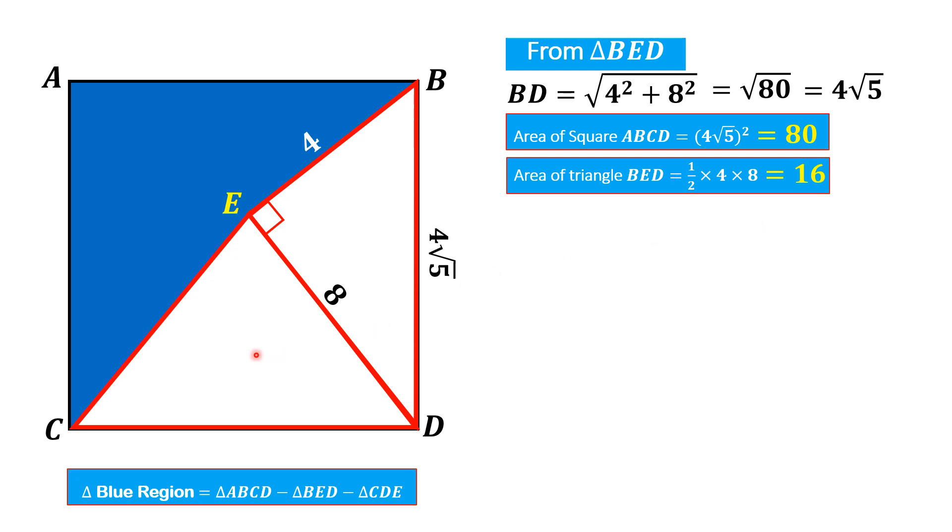Now the remaining task is only to find the area of this triangle CDE. But first we construct this angle. Let us consider angle BDE is angle alpha. Then this implies that angle EDC will be 90 minus alpha.